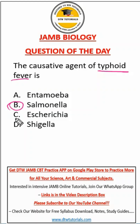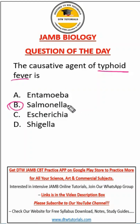Shigella is also a bacteria that causes dysentery. But for typhoid fever, it is salmonella. We get it through the food we eat and through water.